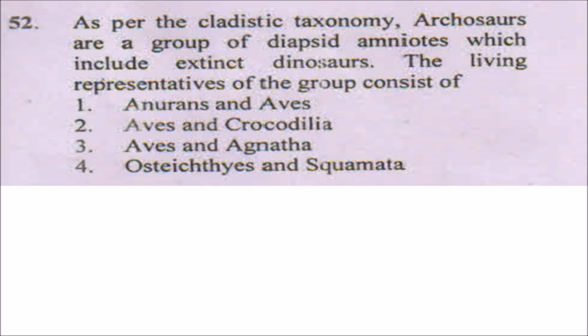For cladistic taxonomy, archosaurs are a group of diapsid amniotes which includes extinct dinosaurs. The living representatives of the group include birds and Crocodilia — i.e., modern birds and crocodiles.